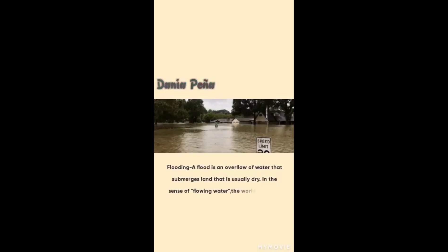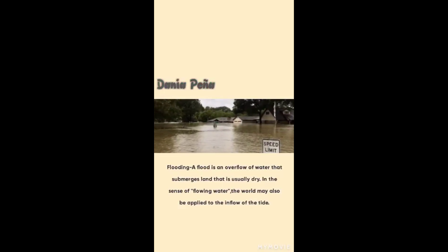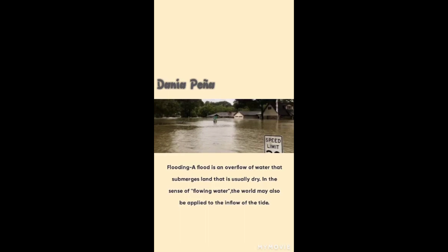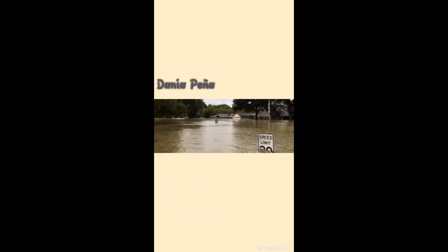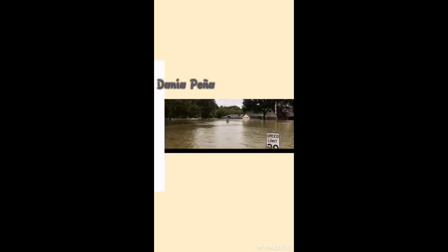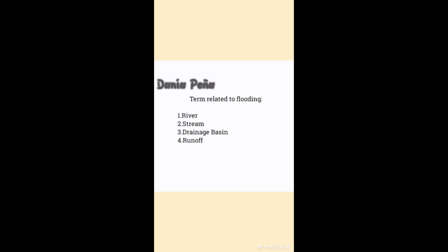Flooding: A flood is an overflow of water that submerges land that is usually dry. In the sense of flowing water, the term may also be applied to the inflow of the tide. Terms related to flooding include river, stream, drainage basin, and runoff.